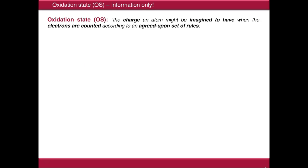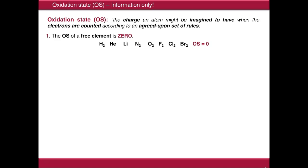The degree of oxidation is measured by the oxidation state, which is defined as the charge an atom might be imagined to have when the electrons are counted according to an agreed upon set of rules. The first rule is that the oxidation state of a free element is zero. So dihydrogen, helium, lithium, dinitrogen, dioxygen, and so on — all have oxidation state zero.